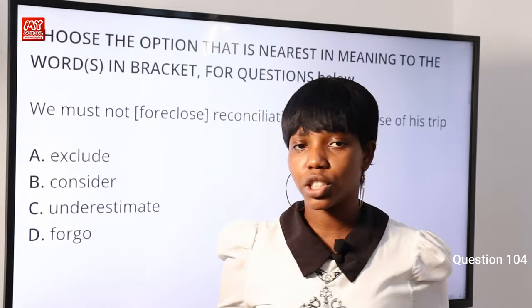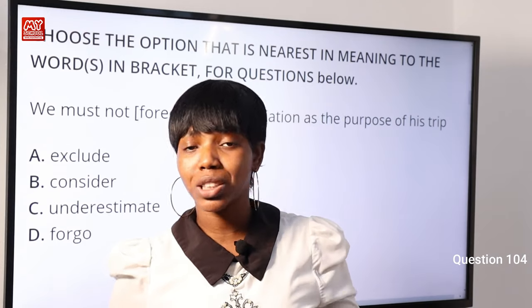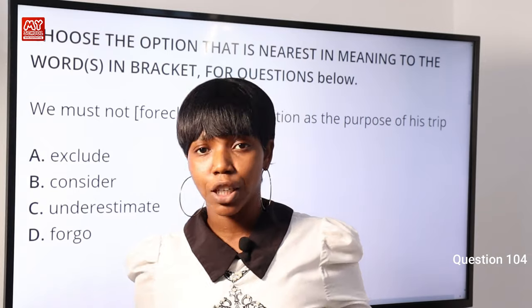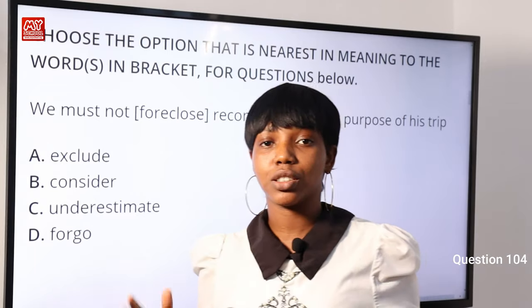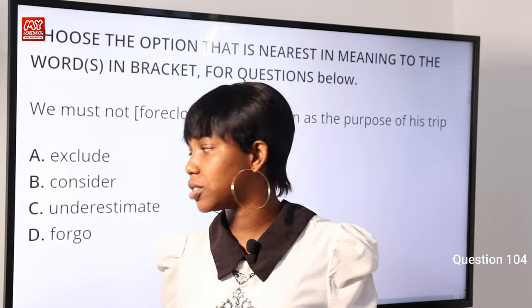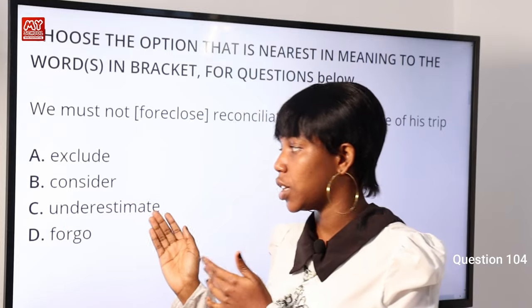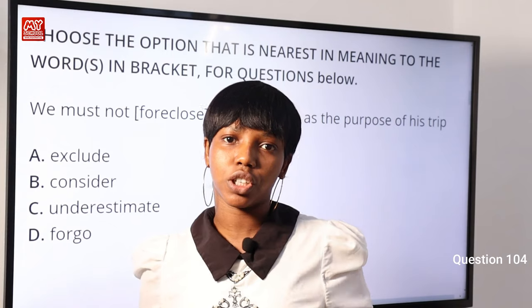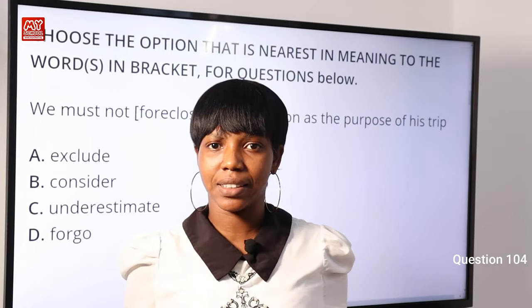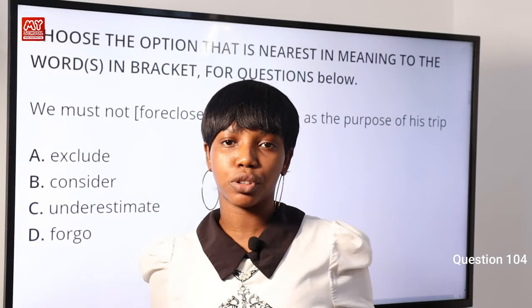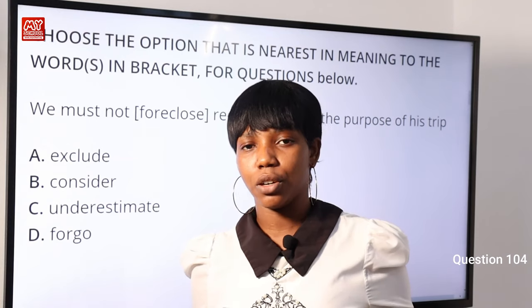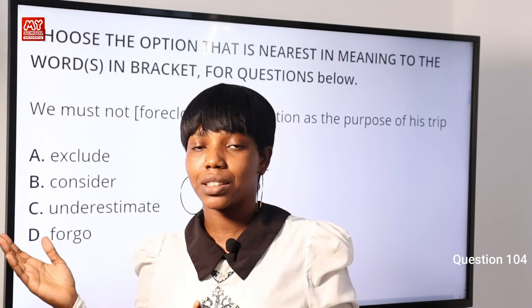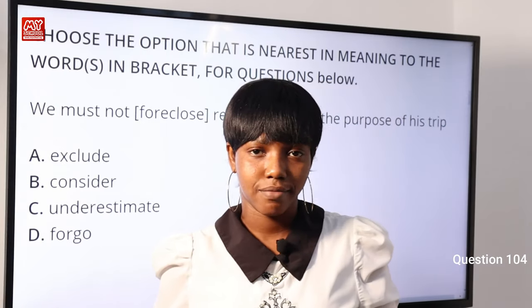Question 104: 'We must not foreclose reconciliation as the purpose of a trip.' Options: A) exclude, B) consider, C) underestimate, D) forego. 'Foreclose' means to shut out completely, to remove completely as if it doesn't exist. 'Exclude' means to eliminate or remove completely. 'Forego' means to leave out — it still exists but you bypass it. 'Consider' and 'underestimate' are not applicable. Since foreclose means complete removal, option A) exclude is the correct answer.